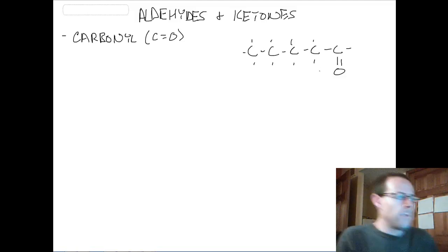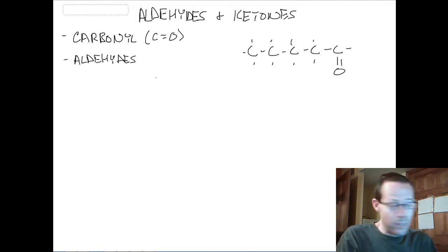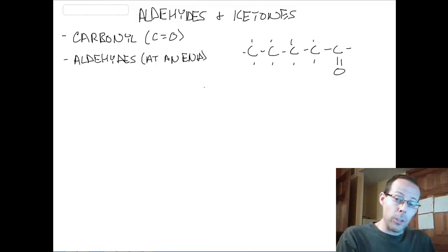So with aldehydes, the carbonyl is always at the end. And by end, because these things happen left, right, right, left doesn't matter. It's always at an end, always on the first carbon. So either the first or the last, because the first and last are really the same because of how we look at molecules, because of the way they exist in three dimensions.